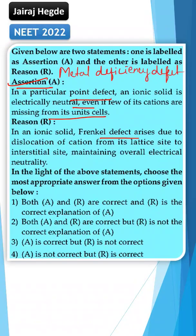The reason states that in an ionic solid, Frenkel defect arises due to the dislocation of cations from their lattice sites to interstitial sites, maintaining the overall electrical neutrality. This is also true. In Frenkel defect, the smaller cation leaves its lattice site and occupies an interstitial site, maintaining both electrical neutrality and density.